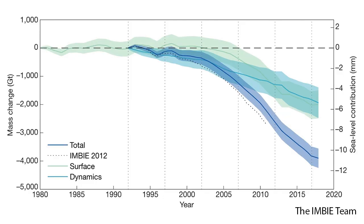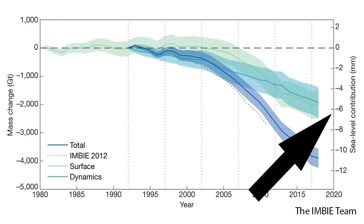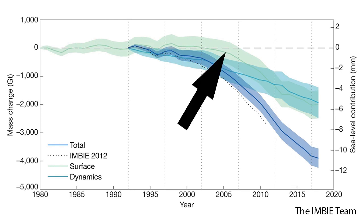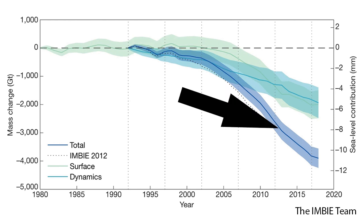This plot shows the cumulative mass loss from the Greenland ice sheet from 1980 to 2018. Cumulative mass in gigatons is shown on the left axis, and total sea level contribution in millimeters is shown on the right. The light green represents surface mass balance, or melt. Light blue is mass loss from dynamic processes, or calving, and dark blue shows the total of the two.